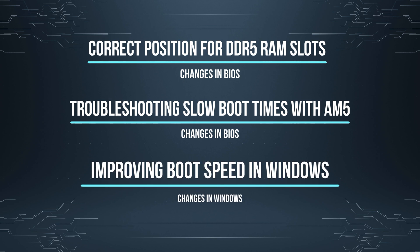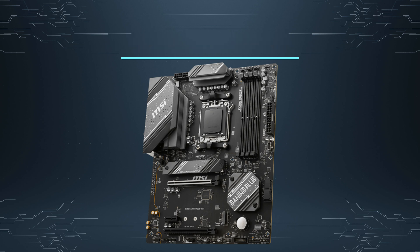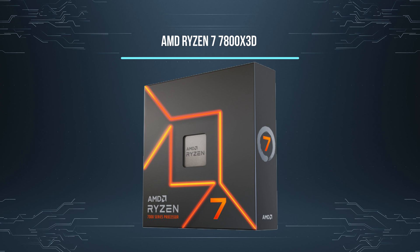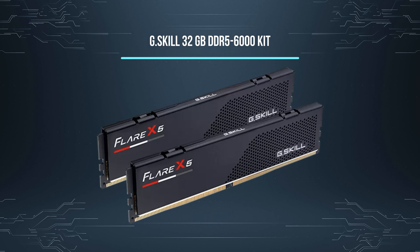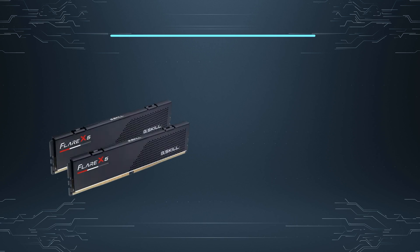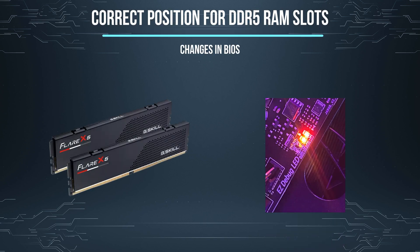First, let's talk about what I have. The motherboard is an MSI B650 Gaming Plus Wi-Fi with socket AM5. The CPU is an AMD Ryzen 7 7800X3D, and the RAM is a G.Skill 32 gigabyte DDR5 6000 megahertz. So let's talk about the correct position for DDR5 RAM slots.